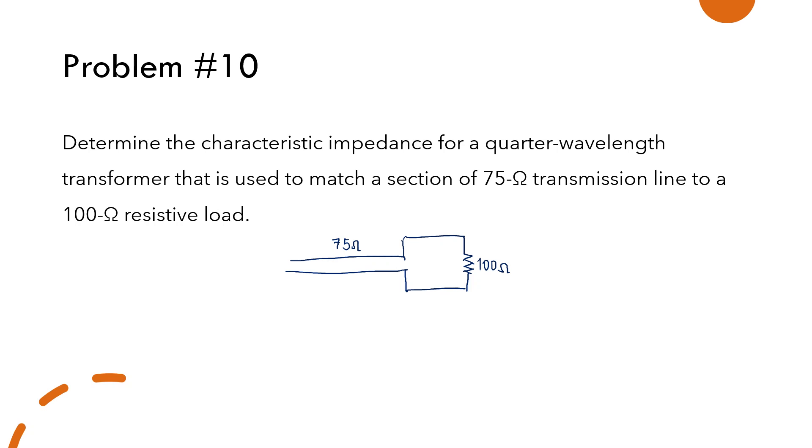Now, the quarter-wavelength transformer is used to match the load impedance with the transmission line characteristic impedance. So this is the quarter-wavelength cable connected before the load. And the formula for the characteristic impedance of the quarter-wavelength transformer